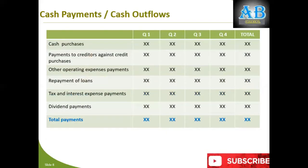Then we have payments: cash purchases, payments to creditors against credit purchases, other operating expense payments such as rent and salaries, utility bill payments, repayment of loans, tax-related payments, interest payments (finance cost), and dividend payments to shareholders. All these could be your outflows. You will incorporate the total of cash payments in your main budget, either within the main format or calculated separately.